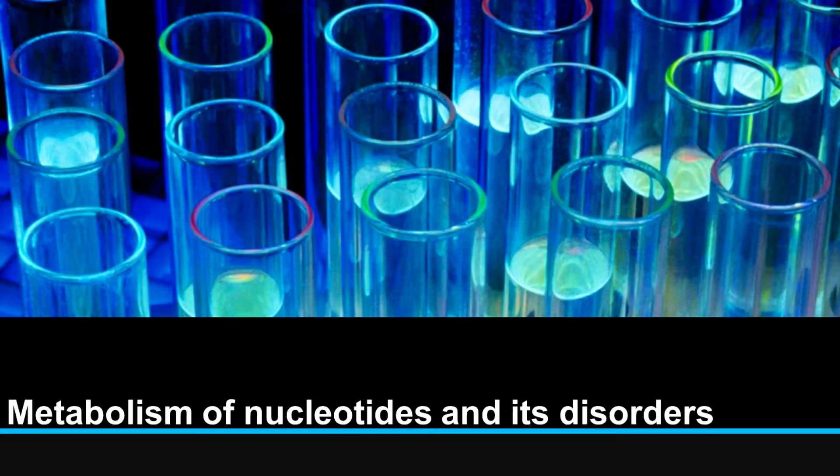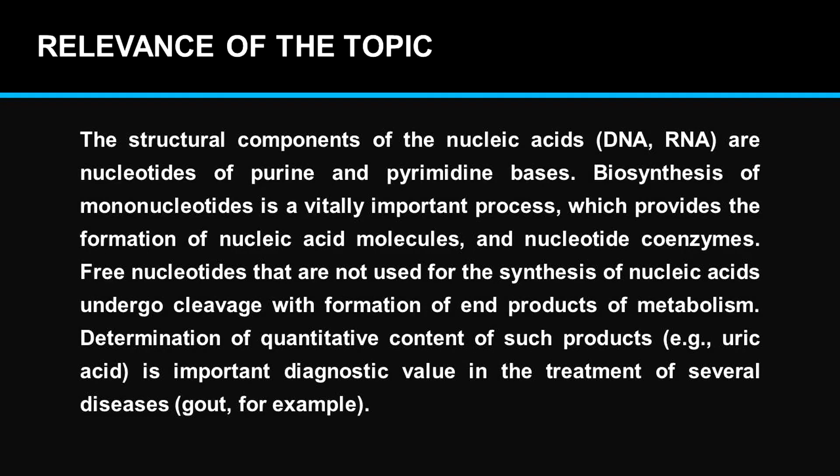Metabolism of nucleotides and its disorders. The structural components of the nucleic acids DNA and RNA are nucleotides of purine and pyrimidine bases. Biosynthesis of mononucleotides is a vitally important process which provides the formation of nucleic acid molecules and nucleotide coenzymes. Nucleotides that are not used for the synthesis of nucleic acids undergo cleavage with formation of end products of metabolism. Determination of the quantitative content of such products, for example uric acid, is of important diagnostic value in the treatment of several diseases.